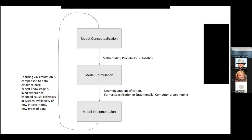All three techniques have challenges with conceptualization. When I say conceptualization with models, what do I mean? The scope of the model is a key thing — what's endogenous, what's exogenous, what's ignored. But what I'm talking about is actually characterizing the mathematical or statistical structure of portions of the model, getting more specific about what you want the model to represent in terms of relationships.